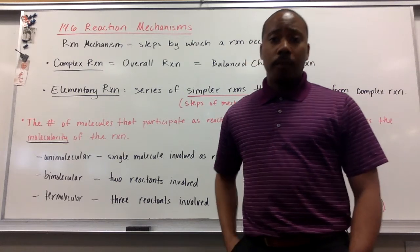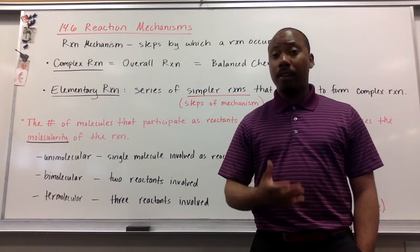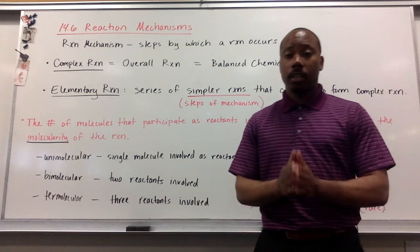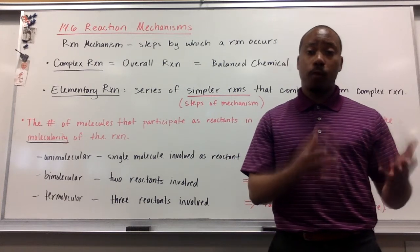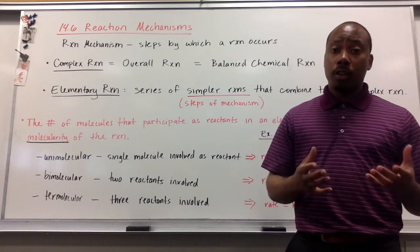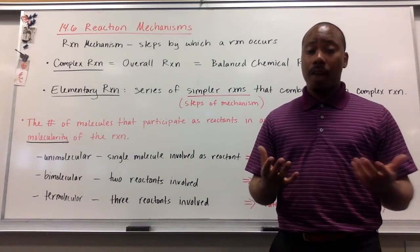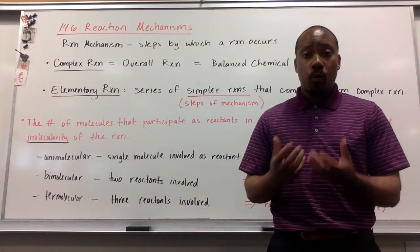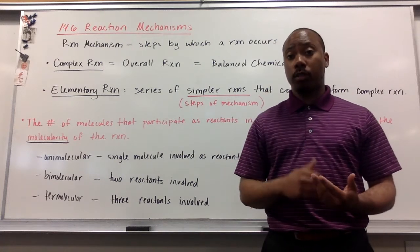We oftentimes look at reactions from the scope of a chemical equation, a balanced chemical equation. In that balanced chemical equation, it tells us a lot of things. It tells us what reactants we're starting with, what products we're going to and forming. It also tells us the ratio in which our reactants and products exist together. However, it doesn't tell us everything. Many chemical reactions don't just happen in one step, from reactants to products. They actually happen in multiple steps.